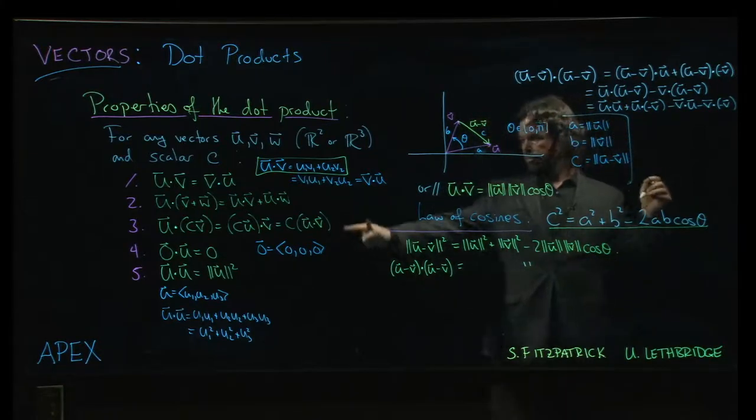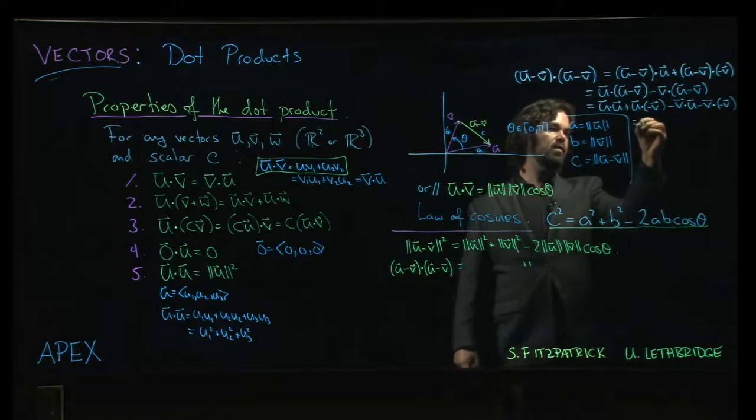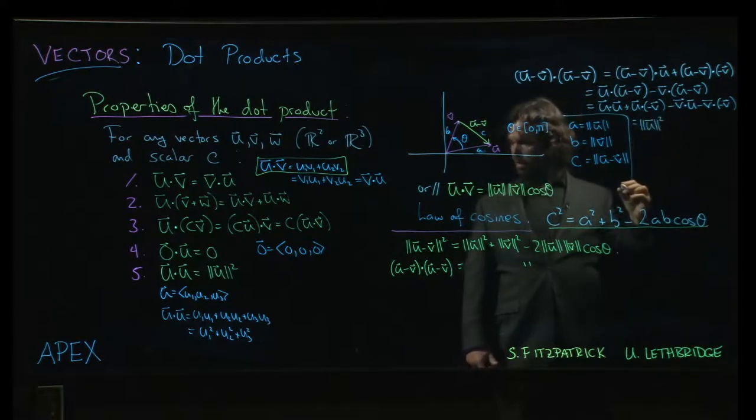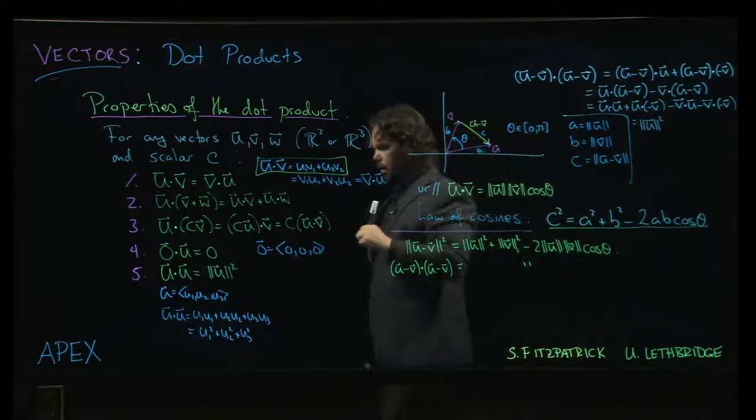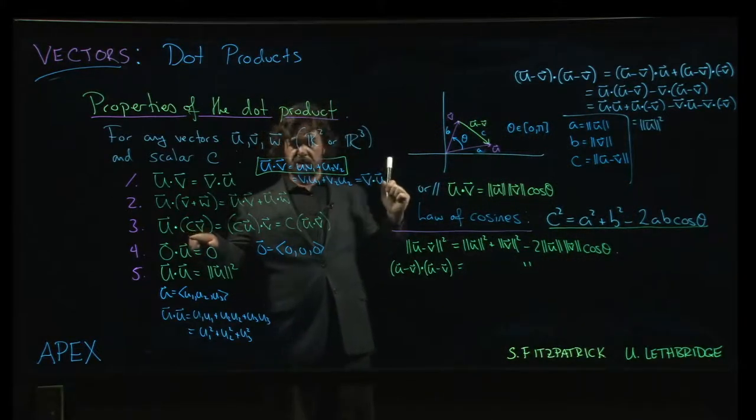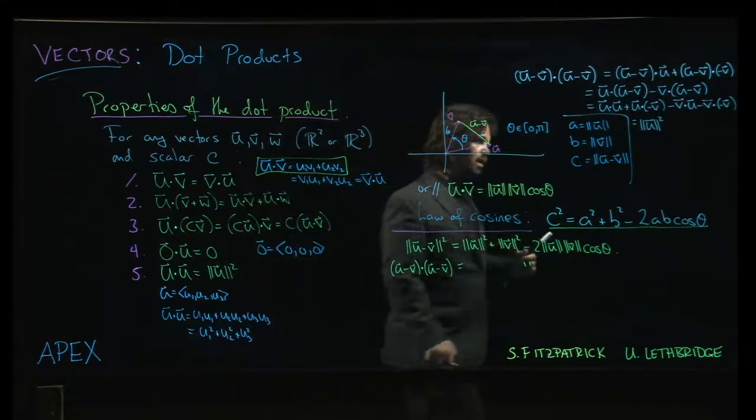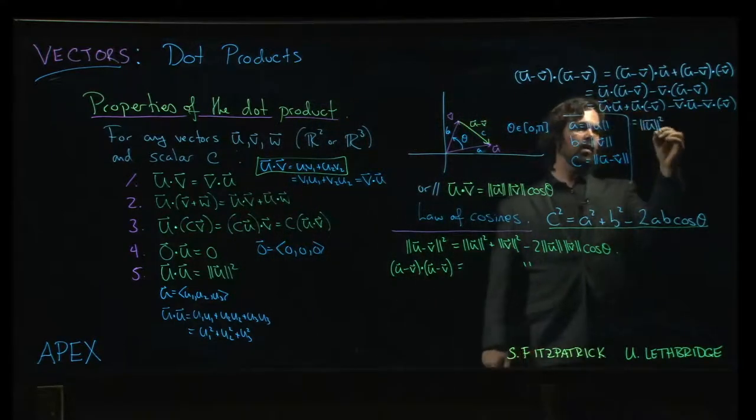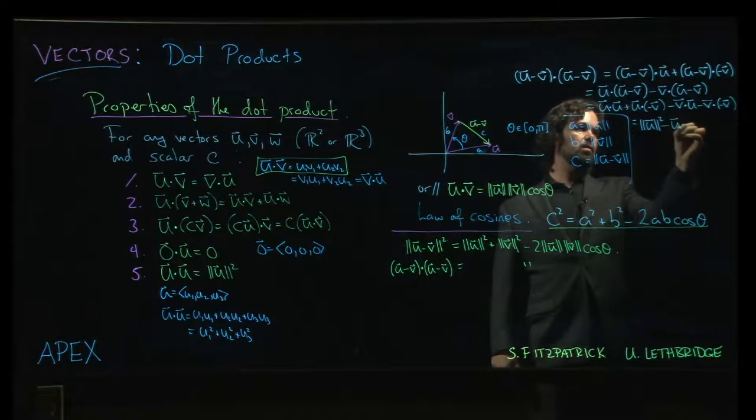Okay, good, well, u dot u by property 5, that's the magnitude of u squared. Property 3, minus v really means minus 1 times v, and so I can bring that minus 1 out front and write minus u dot v.